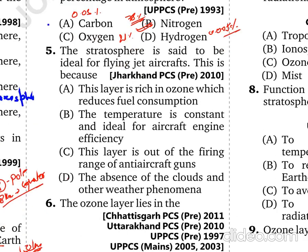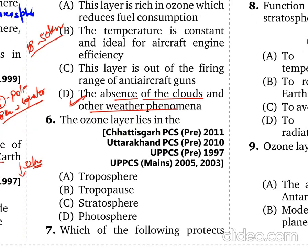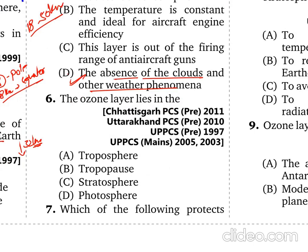The Stratosphere is said to be ideal for flying jet aircraft. This is because the Stratosphere extends from about 18 km to 50 km, and this layer is characterized by the absence of clouds and other weather phenomena. That is why flights and jet aircraft fly there — to avoid any turbulence during the flight. The ozone layer also lies within the Stratosphere, protecting us from the Sun's ultraviolet rays.